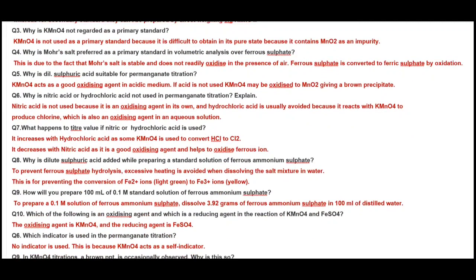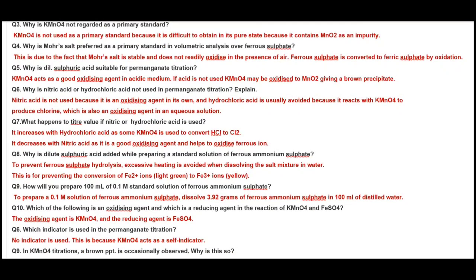Why is Mohr salt preferred as a primary standard in volumetric analysis over ferrous sulfate? Because ferrous is readily converted to ferric sulfate by oxidation, and Mohr salt is more stable and does not readily oxidize in air, whereas ferrous sulfate salt is easily readily oxidizable.